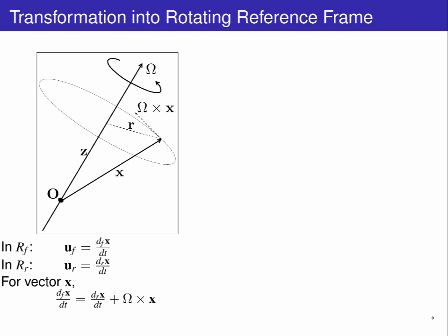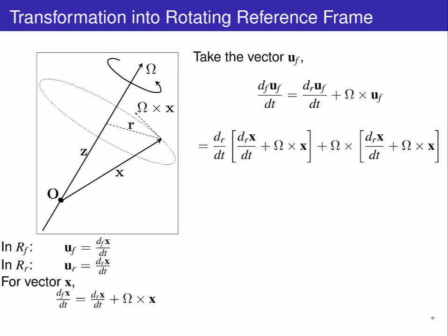For fluids, we are interested in accelerations, so let's perform this transform on the vector describing the fluid velocity in the fixed frame, U_f. We know that U_f is related to the velocity in the rotating frame, U_r, by this equation, so we can make the substitution for U_f on the right-hand side in terms of derivatives in the rotating frame, giving us the velocity in the rotating frame plus the term omega cross x.